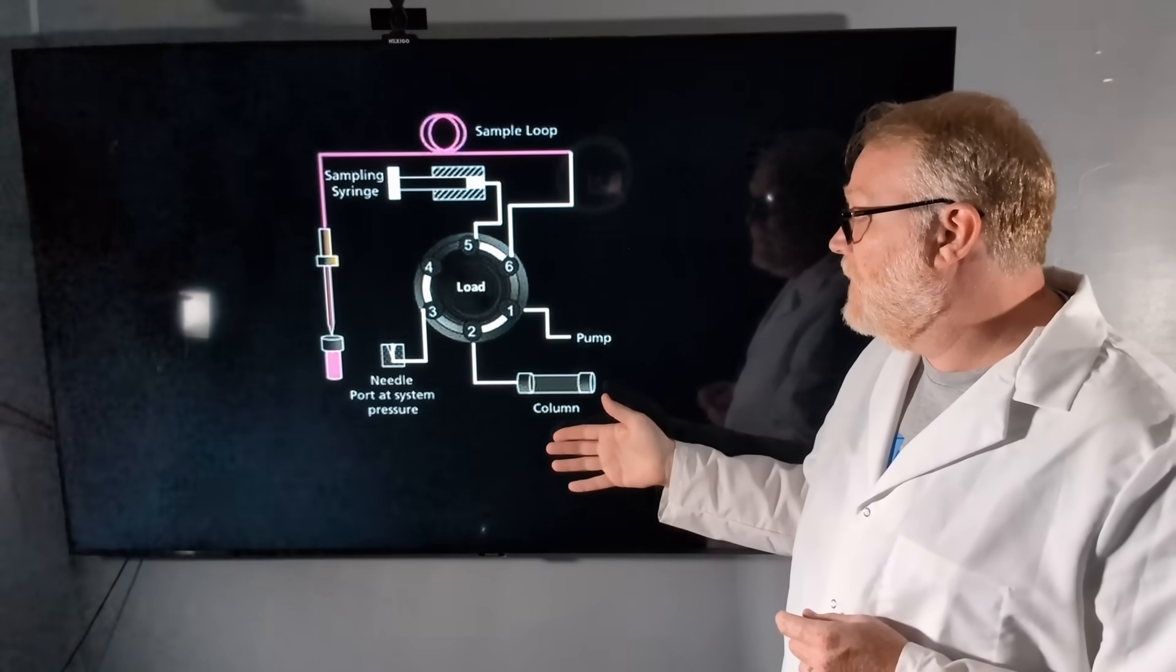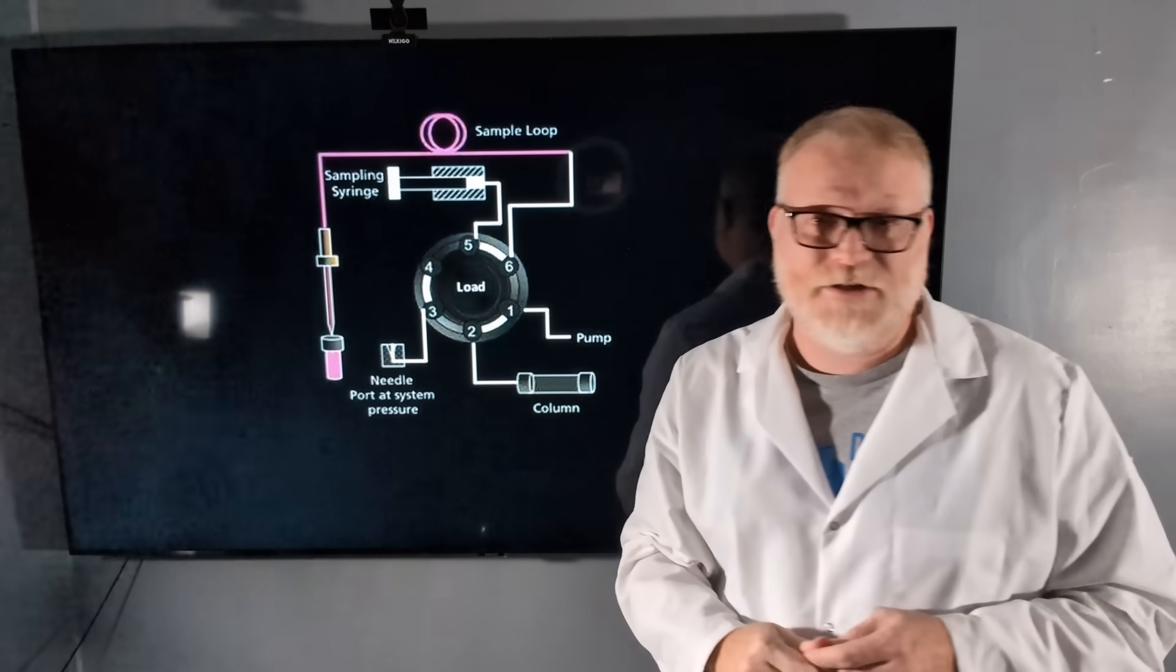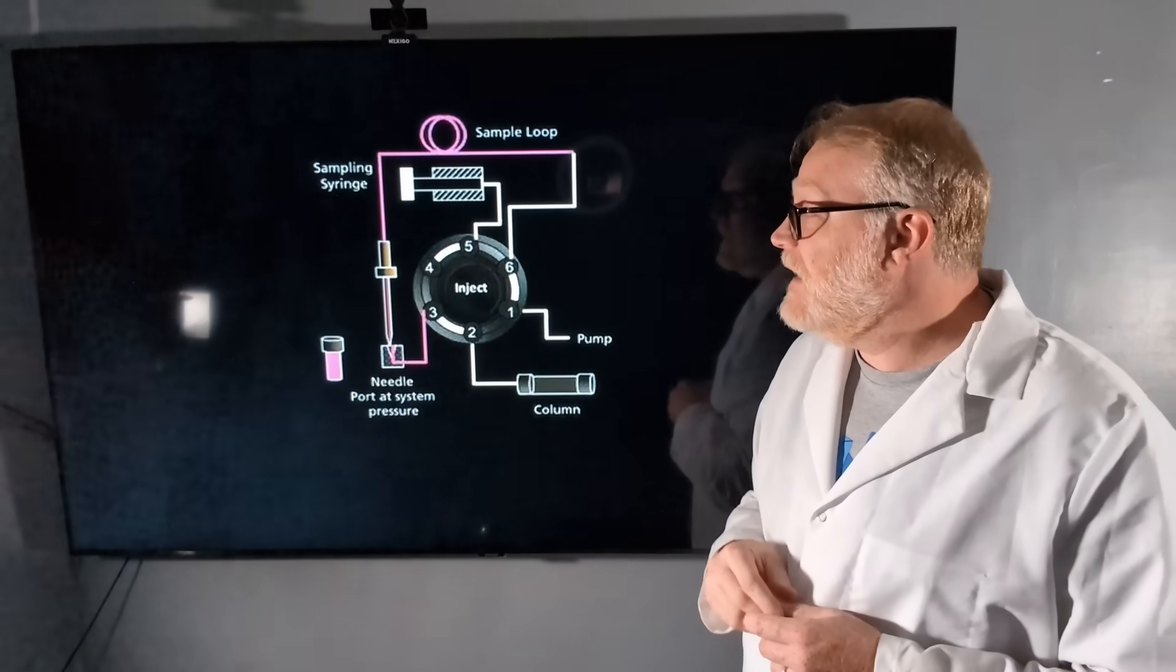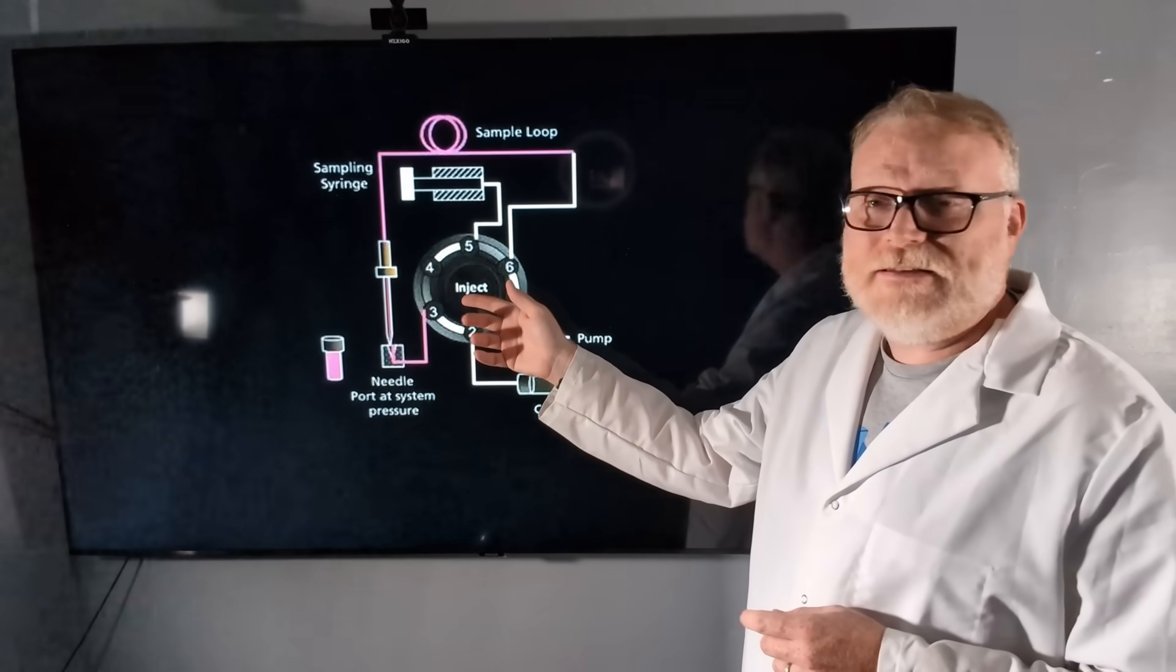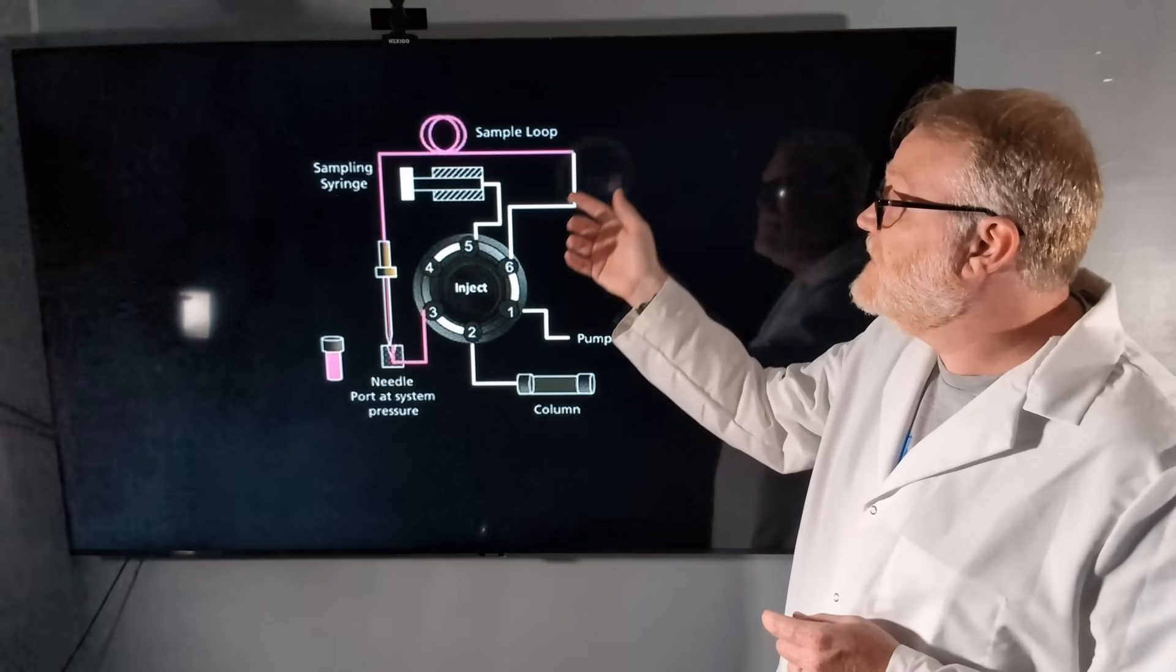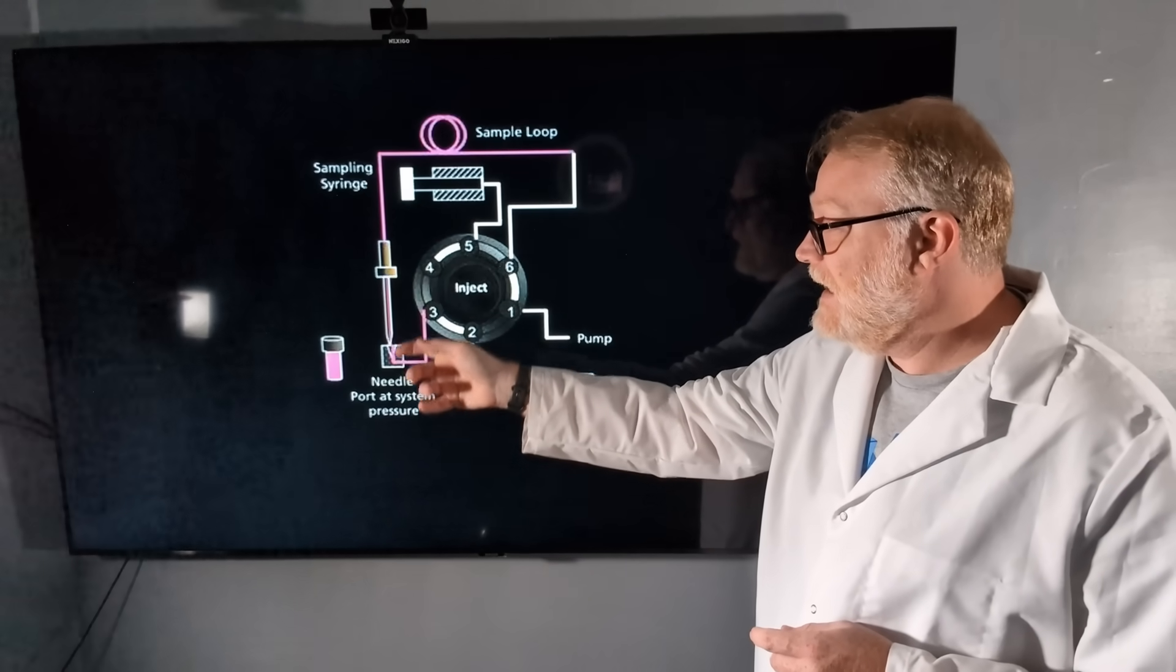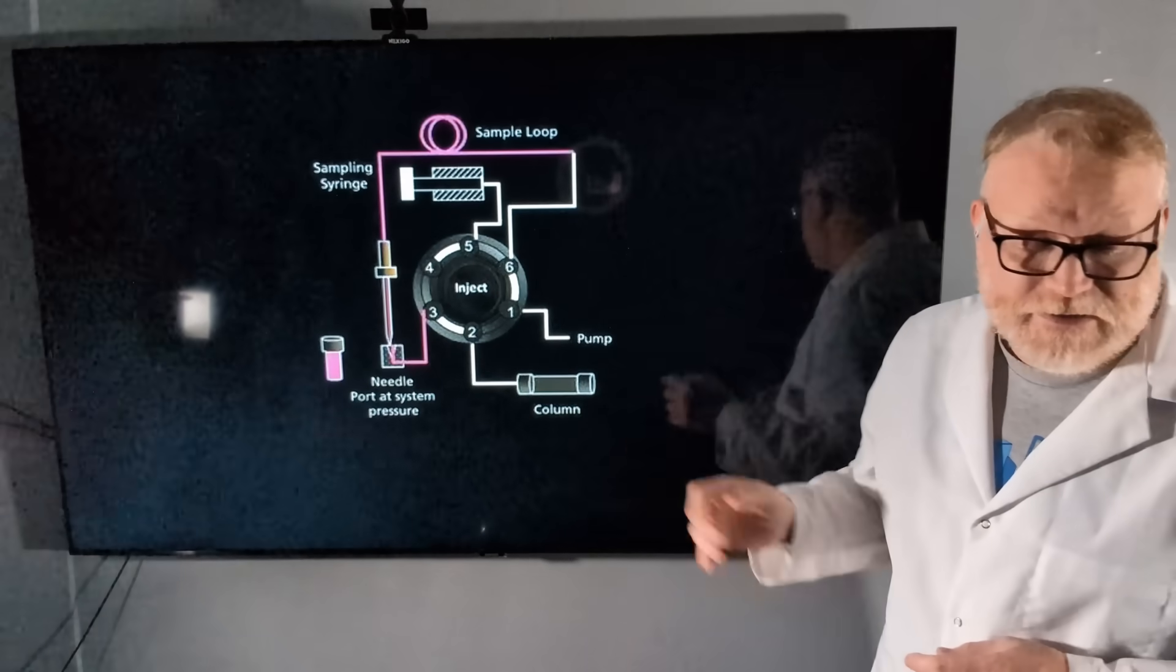We're in the load position. We've got a pump and a column. Now we have a high-pressure needle seat. That needle is going to then move into the high-pressure needle seat. The valve is going to move to inject. Now our pump is connected to our sample loop, which is now connected into that needle and needle seat, and then into our column to our detector.